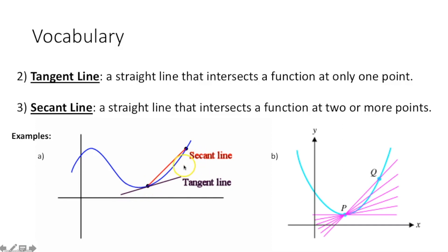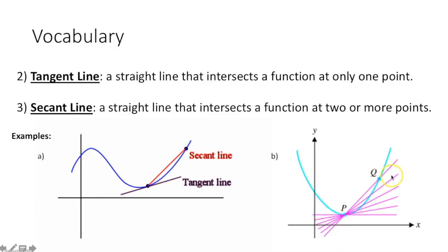A secant line, however, intersects the function at two or more points, going through the function at both of these points. This graph over here actually shows you a bunch of secant lines, the first one going through P and Q, and then eventually turning into a tangent line at point P.